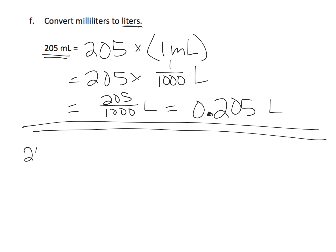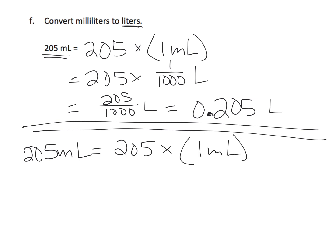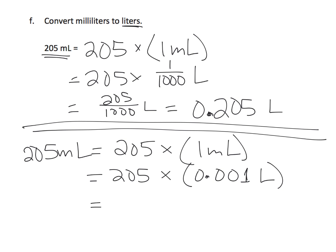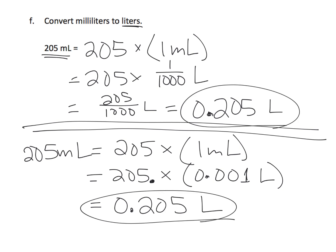What if we go straight to decimals? That's 205 copies times one milliliter, which is a thousandth of a liter, written as 0.001 liter. When multiplying by thousandths, each digit moves three columns to the right, which makes the decimal look like it's moving three columns to the left. Our answer is 0.205 liters — two different ways to get the exact same answer.